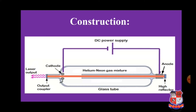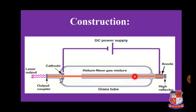Inside the glass tube, a mixture of helium and neon gas is placed. The output coupler is from which the photon light is emitted. The anode and cathode poles are connected to the DC power supply. The electric current flowing through the supply comes into direct contact with the gaseous mixture inside the glass tube, converting into photon energy and emitting light rays. It is quite an interesting topic with an easy and simple construction.